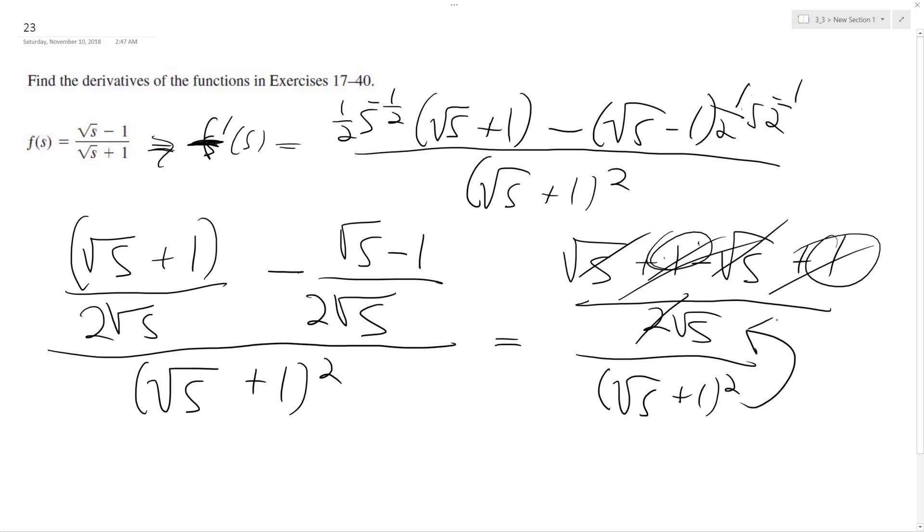So I can actually move this up to here. So I get ultimately F prime of S is equal to 1 over square root of S times square root of S plus 1 raised to the 2. And that's it.